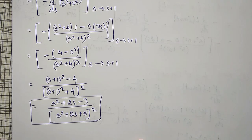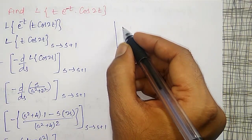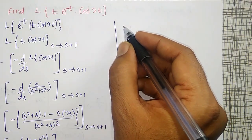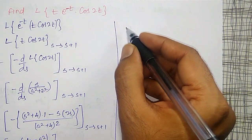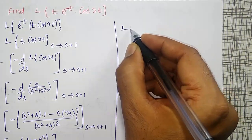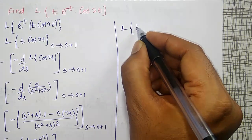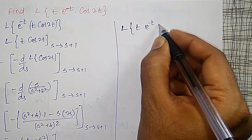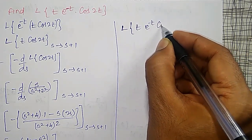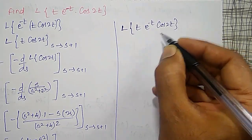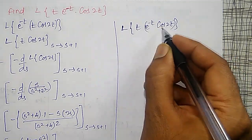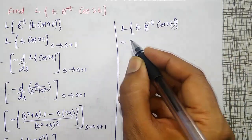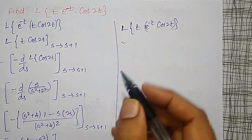Another method: I will treat e to the power minus t times cos 2t as my f of t and apply the second property first. That gives minus d by ds of the Laplace transform of e to the power minus t times cos 2t. Using the first shifting property, Laplace transform of e to the power minus t times cos 2t is s plus 1 divided by s plus 1 whole squared plus 4.